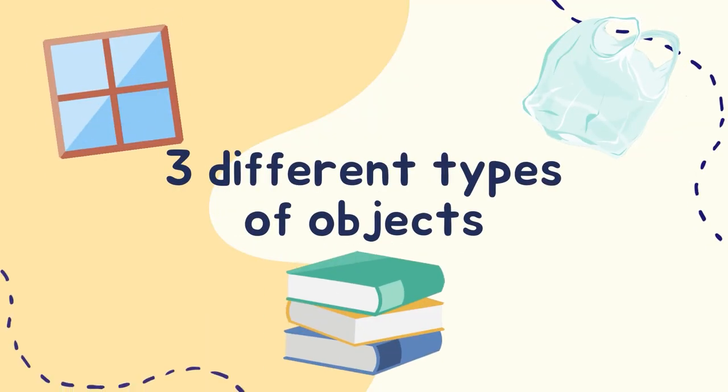Now let's talk about how light interacts with different objects. There are three different types of objects: transparent, translucent, and opaque.